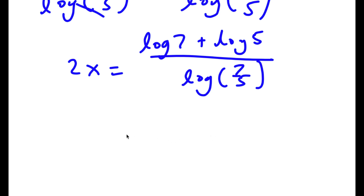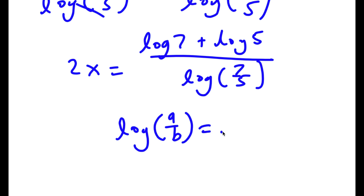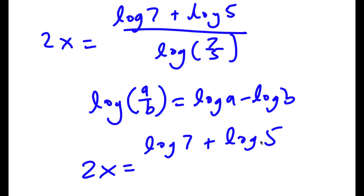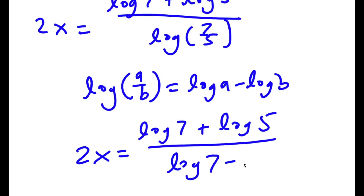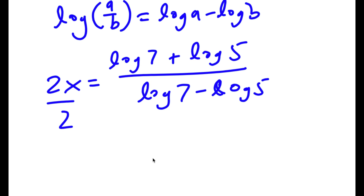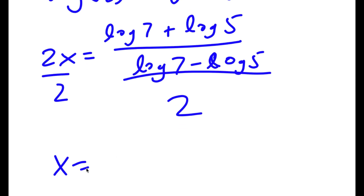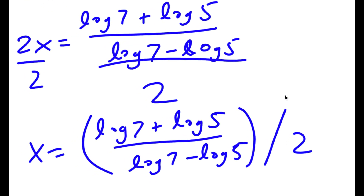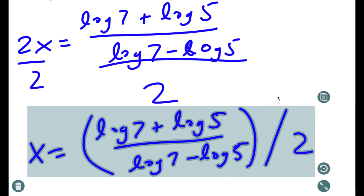Now, log(a/b) equals log a minus log b, so log(7/5) equals log 7 minus log 5. Therefore, 2x equals (log 7 plus log 5) over (log 7 minus log 5). Dividing both sides by 2 gives the final answer: x equals (log 7 plus log 5) over (2 times (log 7 minus log 5)).